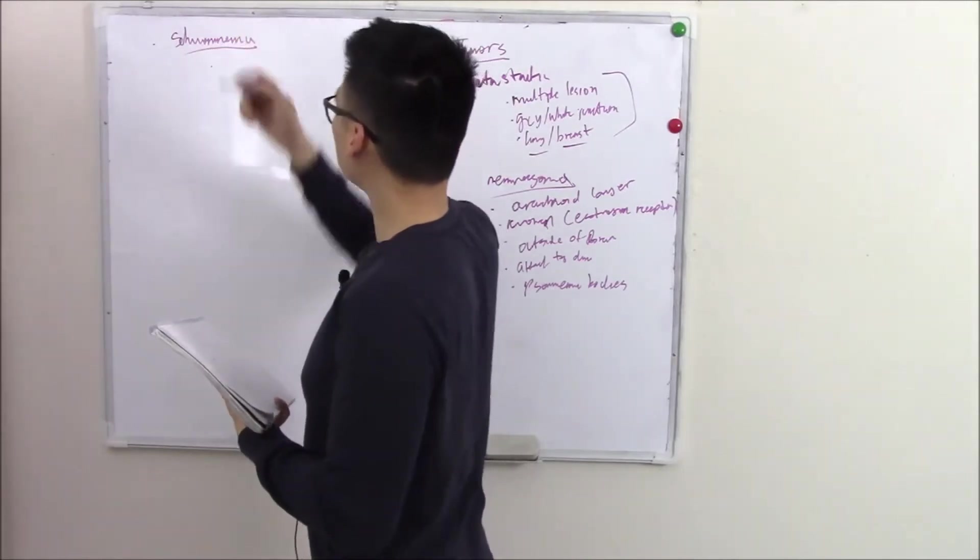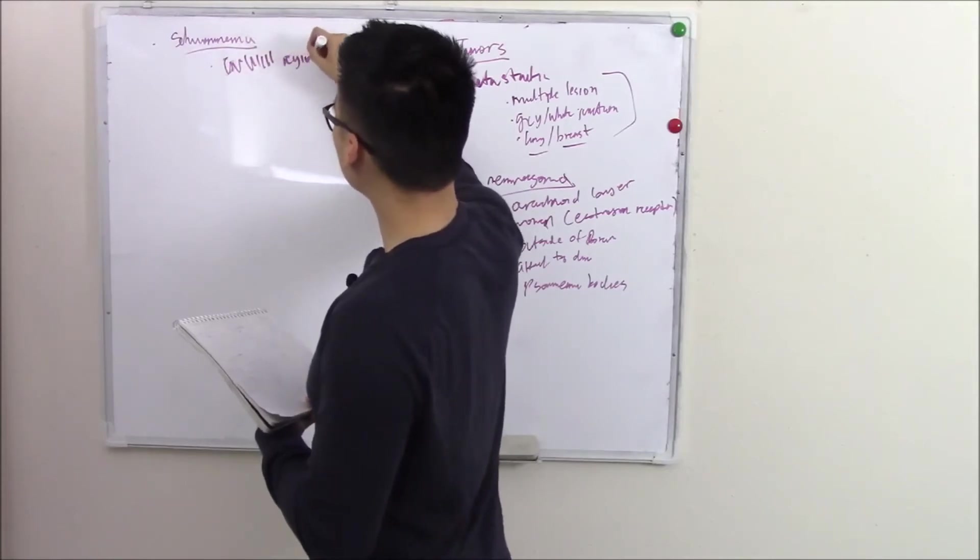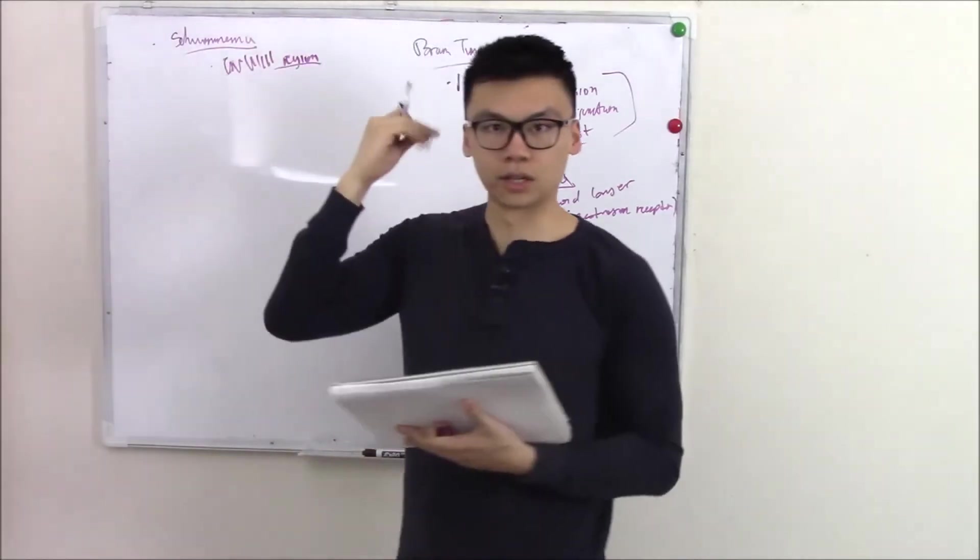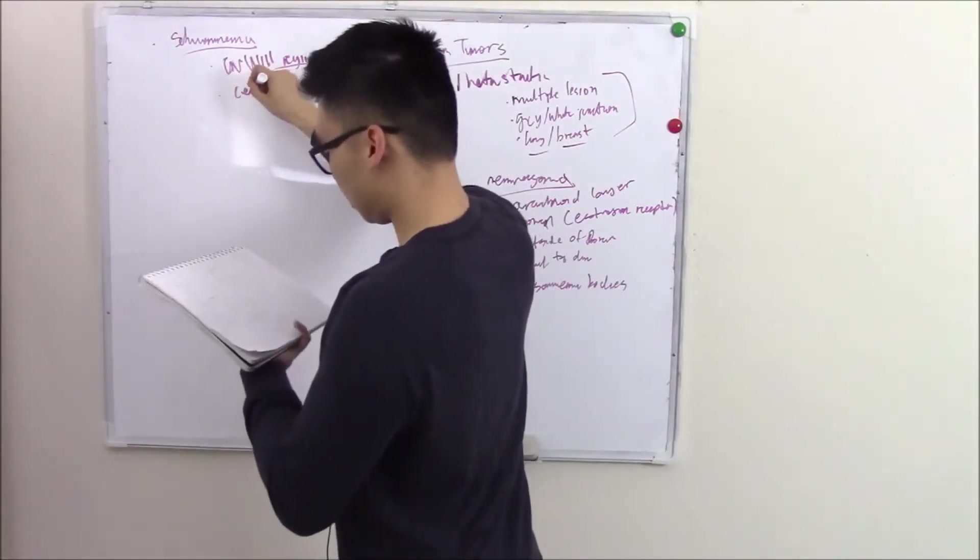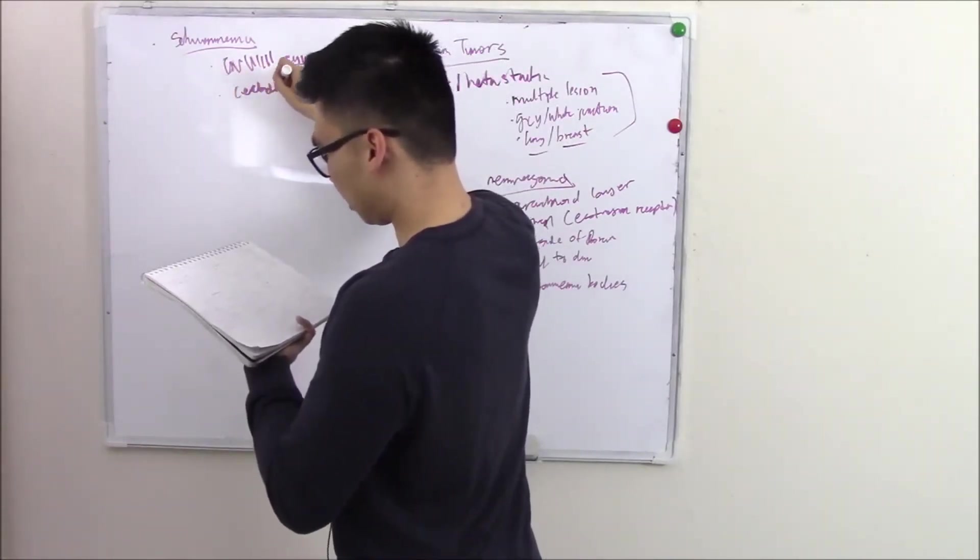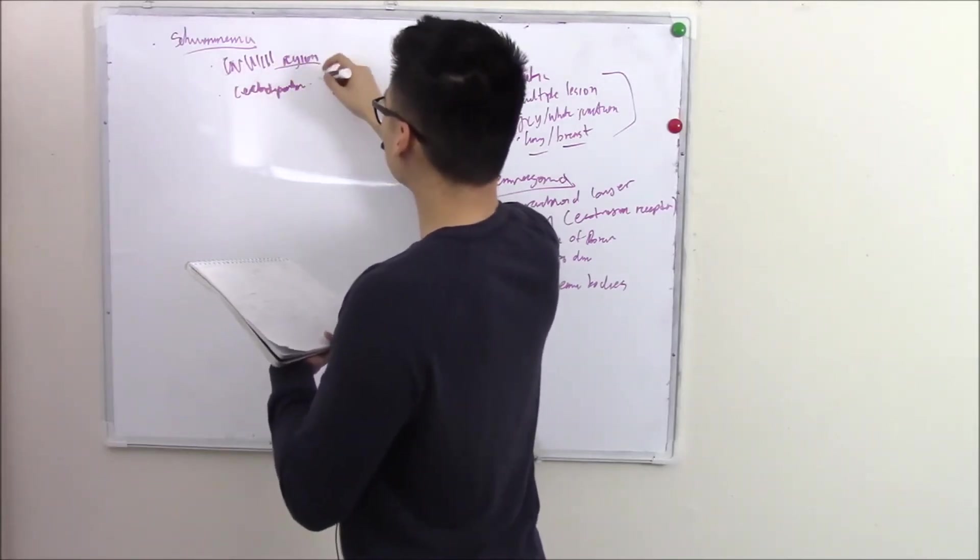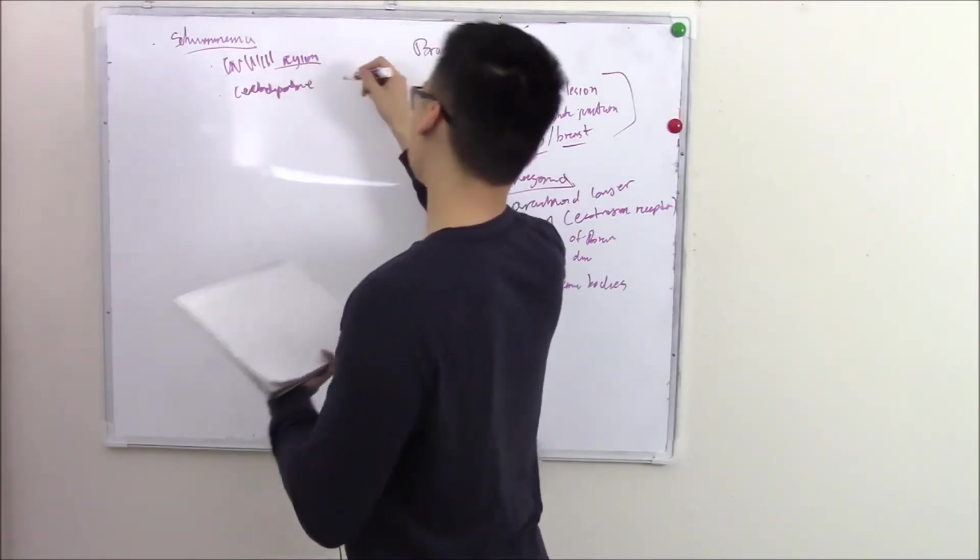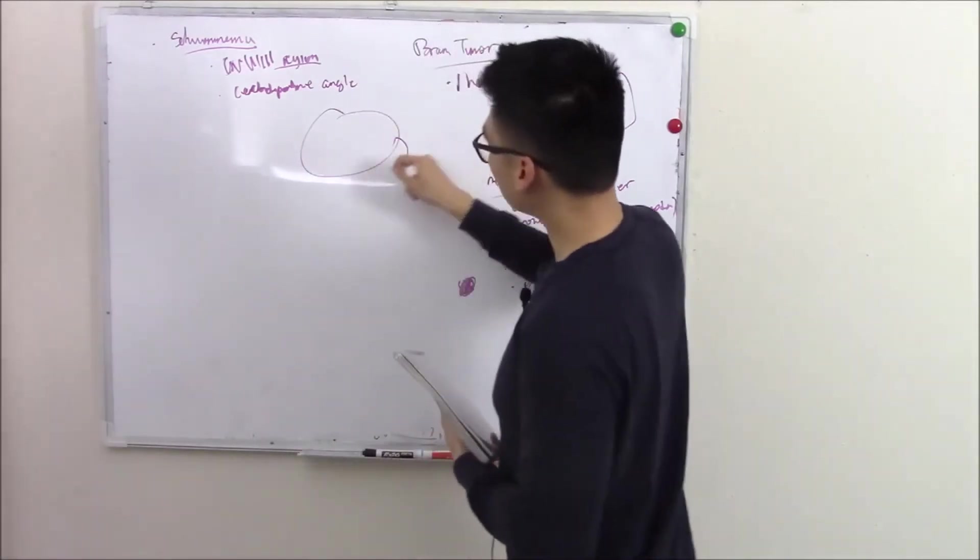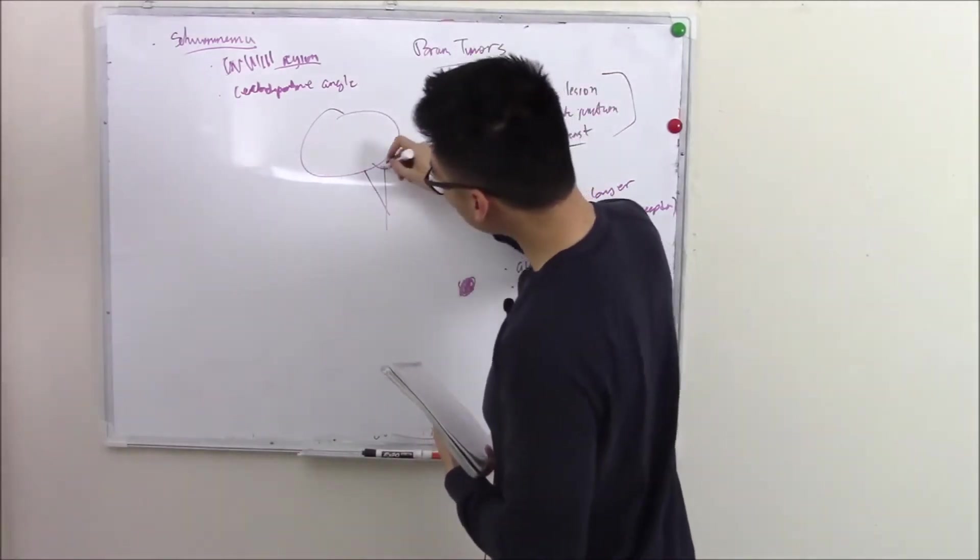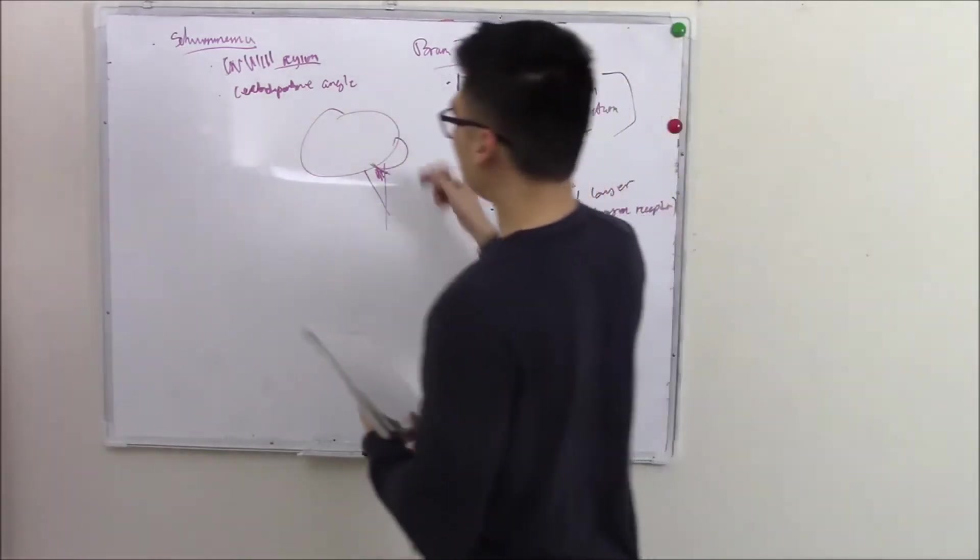What an easy name. Schwannomas like to affect your cranial nerve 8 region. That's no good. That's the cranial nerve that deals with hearing. So you can have hearing loss. Now affects your cerebellopontine region. So, cerebellar pontine region. Sometimes they call it cerebellar pontine angle. So this is your brain. This is your cerebellum. This is your brainstem. Here's your pons. It'll be right between your pons and your cerebellum.